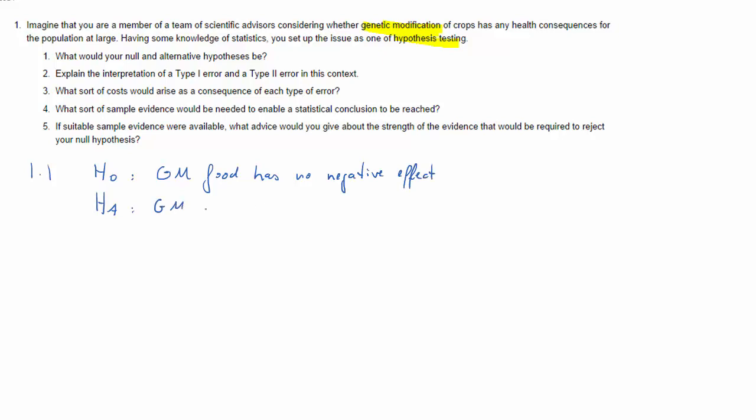The alternative then would obviously be that GM food has a negative impact or has an impact. I think very few people say it may have a positive one. So let's look at our decision table where we compare decision and truth. We divided the world into H0 and HA.